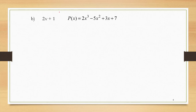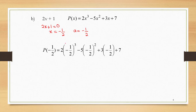Let's go to the next part, which is when the polynomial is divided by 2x plus 1. P(x) equals 2x³ minus 5x² plus 3x plus 7. We set 2x plus 1 equal to 0 to get the value of x equal to negative one-half. Since x equals a, the value of a is negative one-half. So we compute P(−1/2): 2 times (−1/2)³ minus 5 times (−1/2)² plus 3 times (−1/2) plus 7, which gives negative 1/4 minus 5/4 minus 3/2 plus 7, equal to 4. Therefore, the remainder is equal to 4.